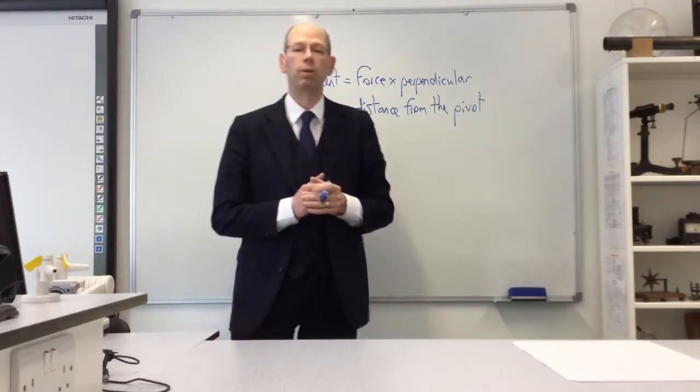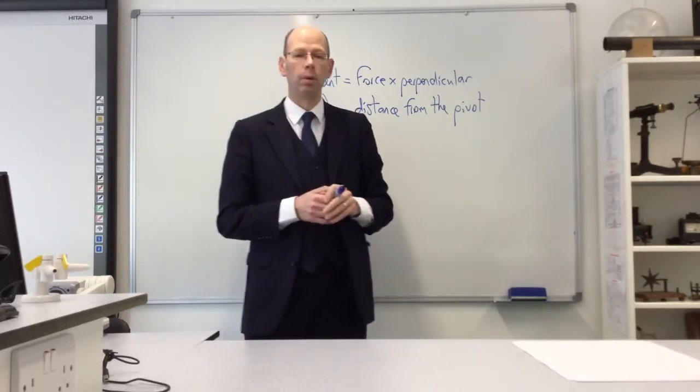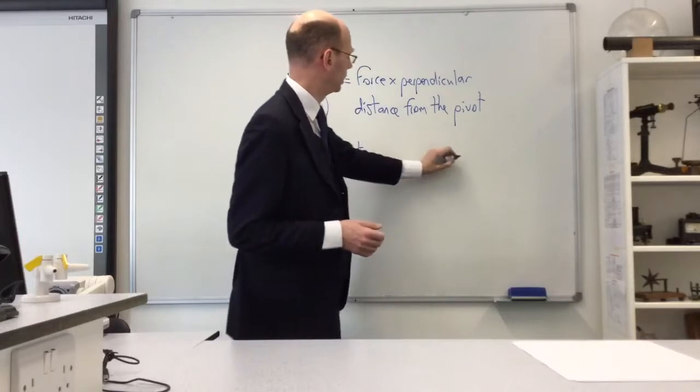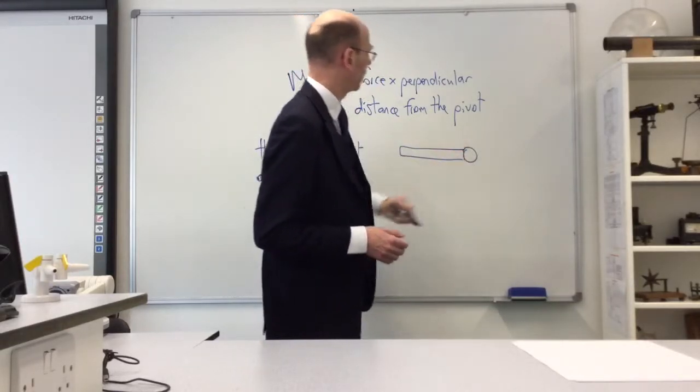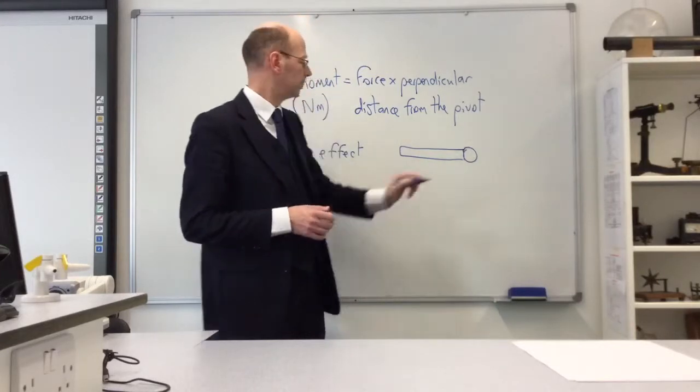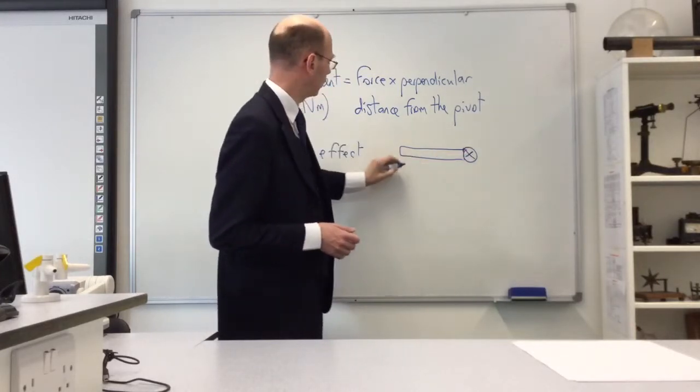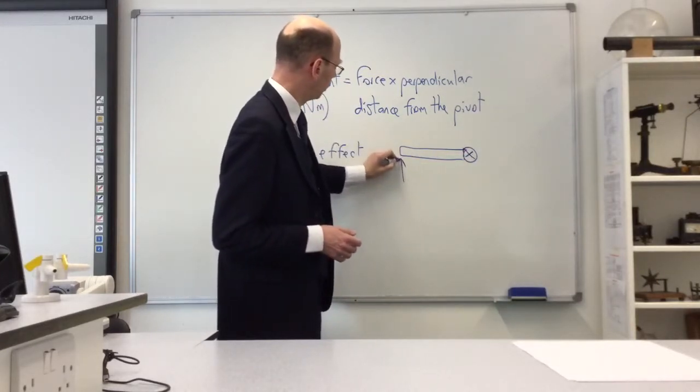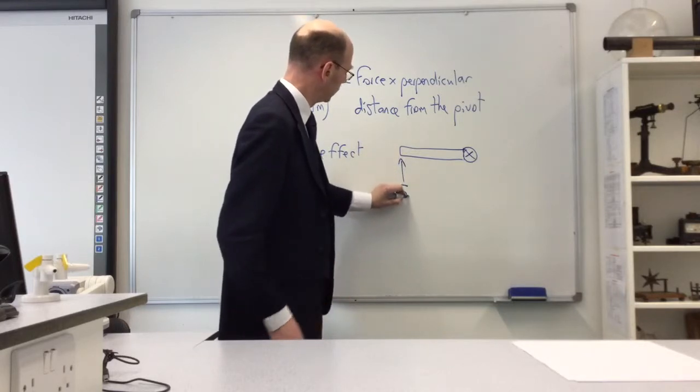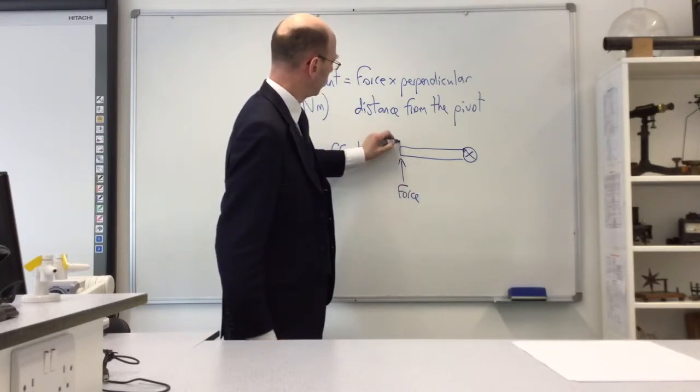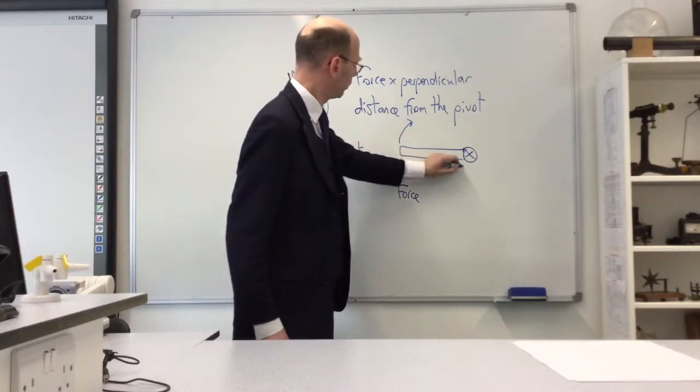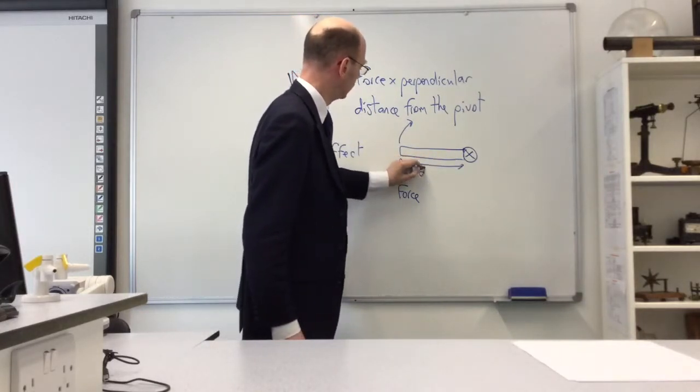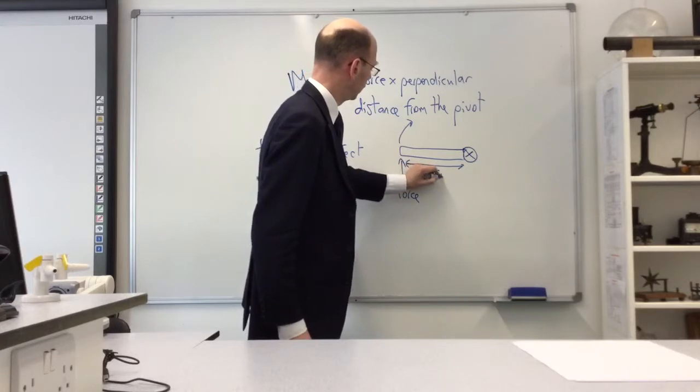Forces, when applied to objects with pivots, tend to make them rotate. Let's take a simple example. Suppose I've got a door with a pivot hinge on one side—imagine this as a top-down view. If I come along and put a force there, that's going to make the door spin around in that direction. I apply that force at a certain distance from the pivot.